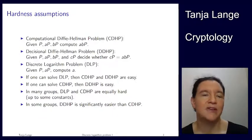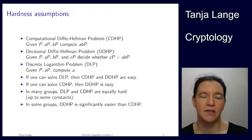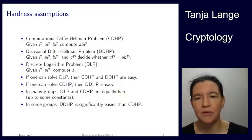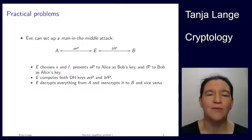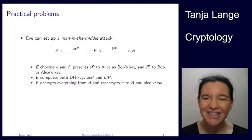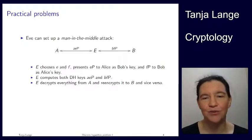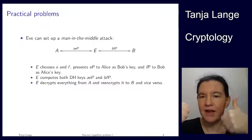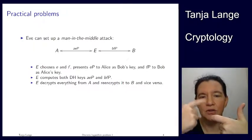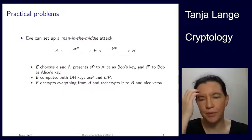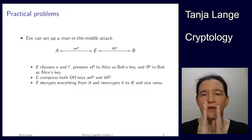Something you should always ask yourself: when Alice and Bob send things to each other or post them on web pages, how do they know they talked to the right person? How do we know there's not a man-in-the-middle attack — or more precisely, an Eve-in-the-middle attack? Instead of Alice talking to Bob, we have Eve in the middle. Alice talks to Eve, and Eve relays to Bob.